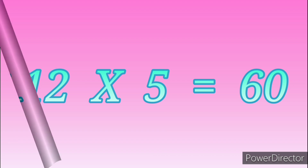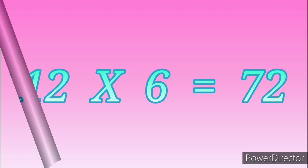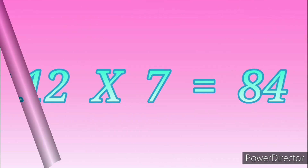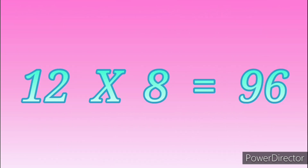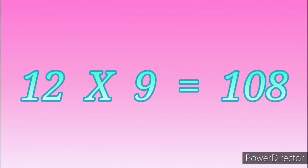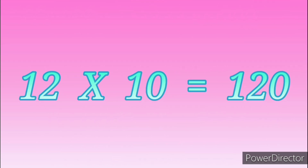12 sixes are 72. 12 sevens are 84. 12 eights are 96. 12 nines are 108. 12 tens are 120.